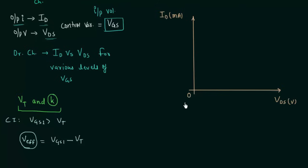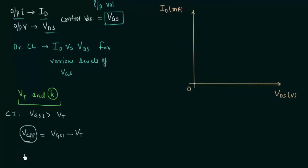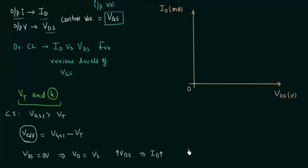Initially when VDS is equal to zero, the drain current ID will be zero, because the potential difference between drain and source is zero volts — VDS = 0 implies VD equals VS, so there is no potential difference and current will not flow. Now if you go on increasing VDS, the drain current ID will also increase linearly, because the potential difference between drain and source is increasing.